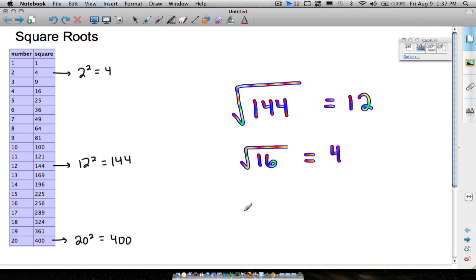So the square root of 64, if you don't know that by heart, what number times itself is equal to 64? Well, here we go right here. 8 squared is equal to 64. 8 times 8 is equal to 64. So the square root of 64 is equal to 8.